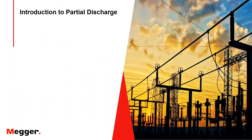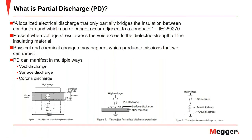Moving into an introduction to partial discharge. According to the IEC 60270 standard, a partial discharge is a localized electrical discharge that only partially bridges the insulation between conductors, and which can or cannot occur adjacent to a conductor. Partial discharges are in general a consequence of local electrical stress concentrations in the insulation or on the surface of the insulation. Such discharges appear as pulses having a duration much less than one microsecond.